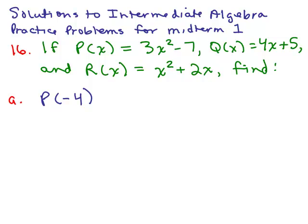We're on number 16 of the solutions to the intermediate algebra practice problems for midterm 1. If P(x) equals 3x² - 7, Q(x) equals 4x + 5, and R(x) equals x² + 2x, part A says find P(-4).